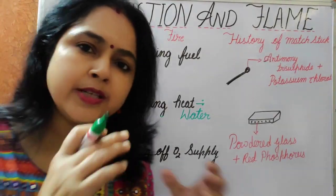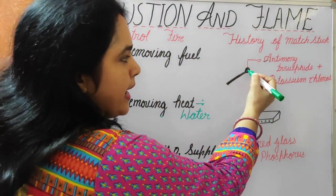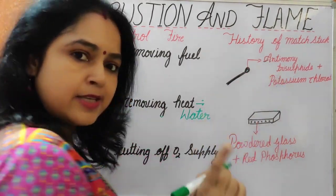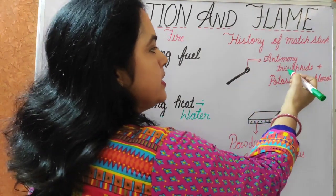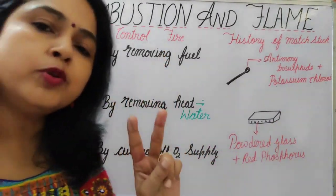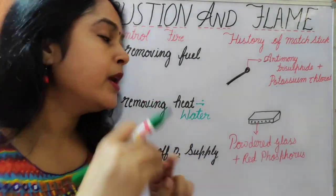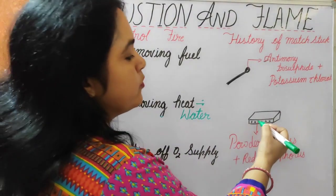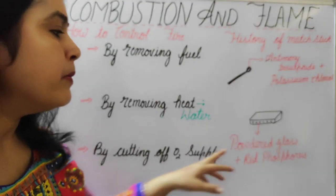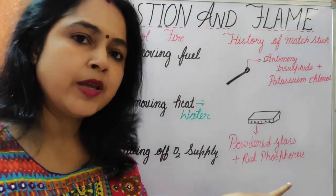The modern match — that is the stick head of this stick — consists of antimony trisulfide plus potassium chlorate. So it consists of two compounds: antimony trisulfide and potassium chlorate. Now the striking surface of the matchbox consists of two compounds: powdered glass and red phosphorus.